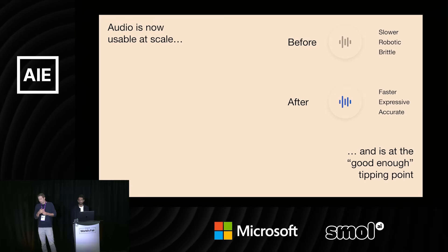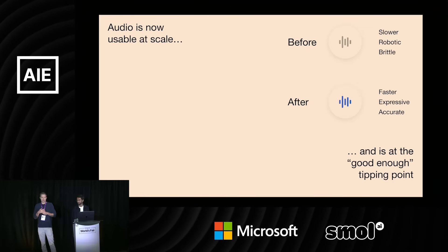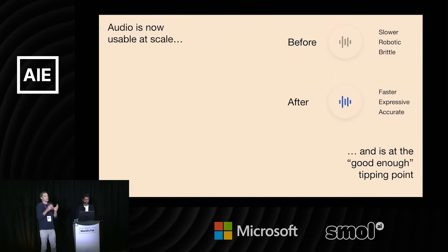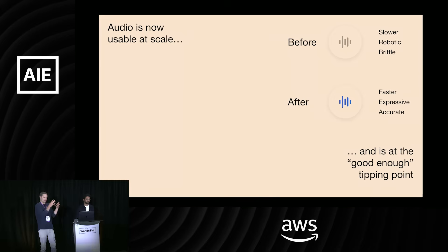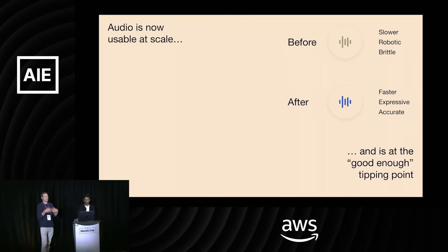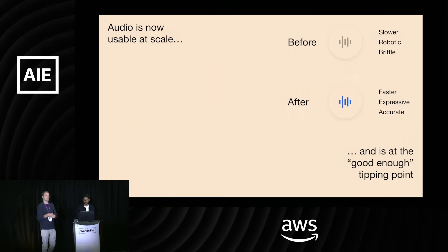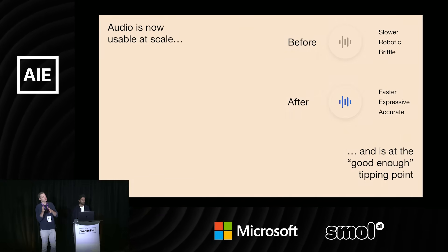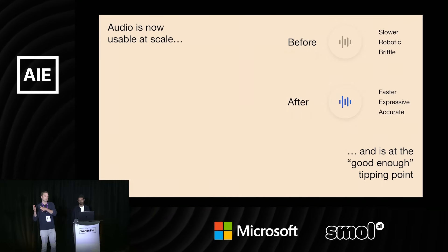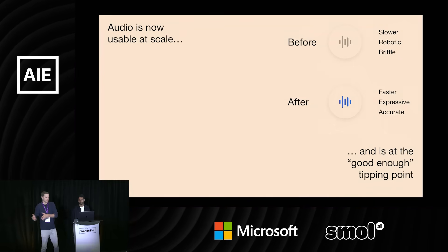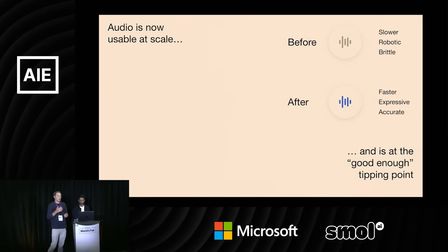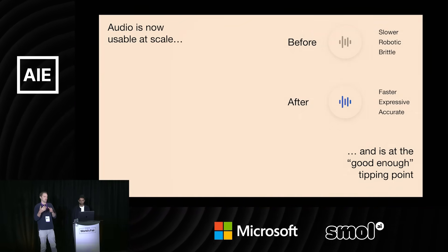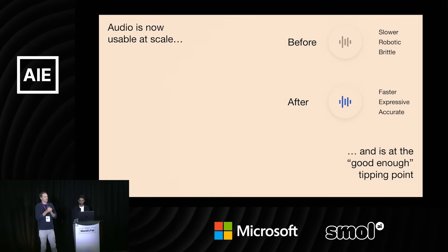One important thing we're starting to see is that audio is really getting to that point where it's becoming much more usable at scale. We've had the transcription and TTS side, but especially that speech-to-speech low-latency experience — models are getting good enough and are at this tipping point where you can start to really meaningfully build high-quality production applications at scale. Before, the models were a lot slower, robotic, and brittle, and now they're a lot faster, expressive, and accurate.